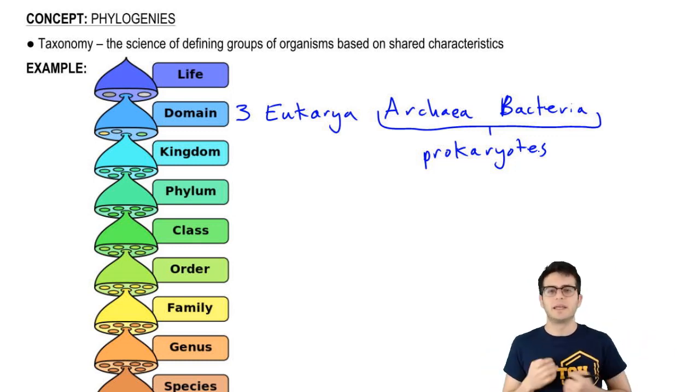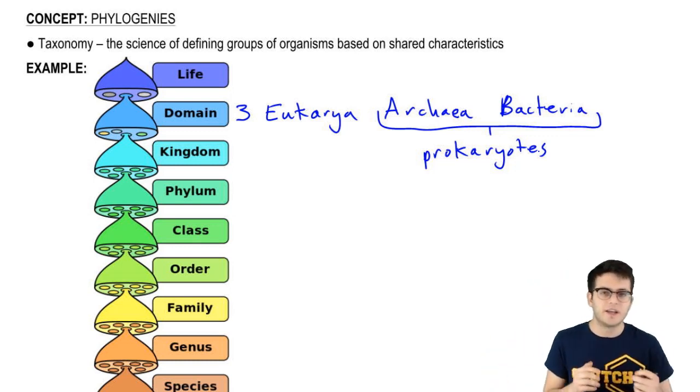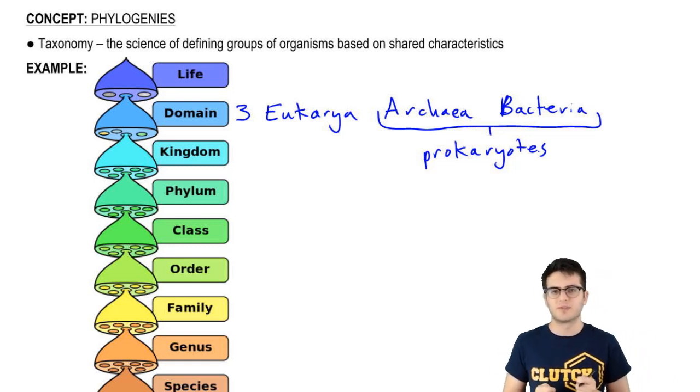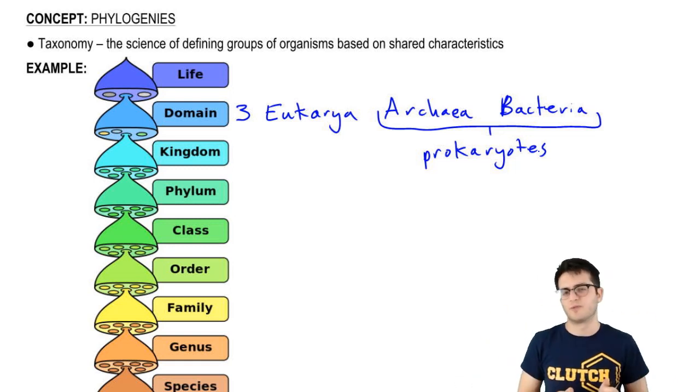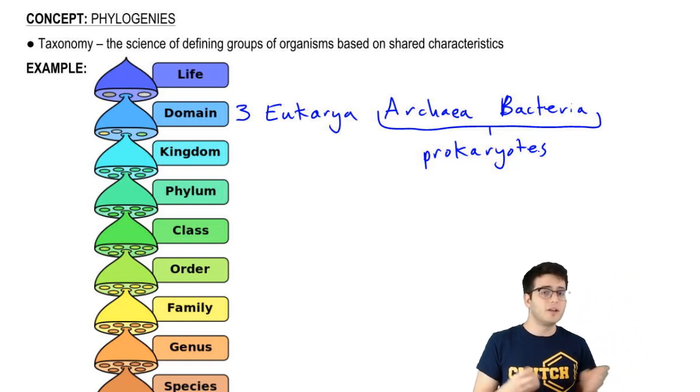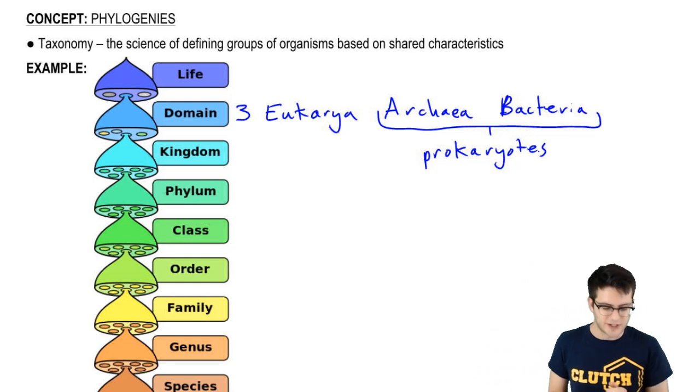So, taxonomy has a lot of issues. However, it doesn't mean it's useless. It's still very useful to try to group organisms, to try to separate groups of organisms, to further our understanding of, ultimately, evolutionary relationships.